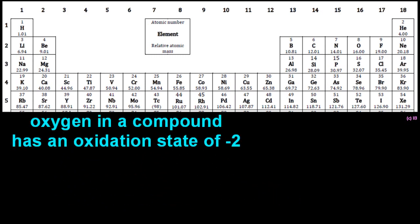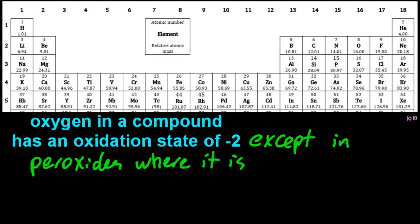There is an exception to that rule that the IB wants you to know. Except in peroxides, where oxygen has a minus one oxidation number. And this is the most common example. Hydrogen peroxide.